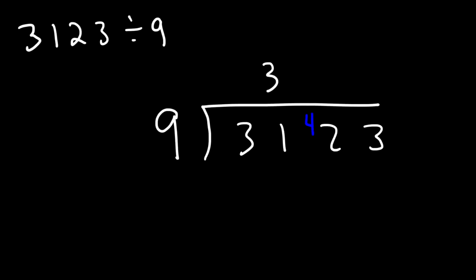Now how many times does 9 go into 42? 9 times 4 is 36. 9 times 5 is 45. So 45 exceeds 42. Therefore 9 goes into 42 four times. 9 times 4 is 36 as we said. Now we need to take the difference between 42 and 36. 42 minus 36 is 6. And let's take that 6 and transfer it to the next number.